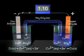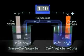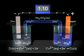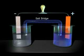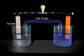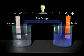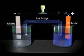Electrons flow from the anode to the cathode through the external circuit. To maintain electrical neutrality in the two cell compartments, ions must move through the salt bridge. In summary, remember that in a voltaic cell, the anode at which oxidation occurs is the negative electrode, the cathode at which reduction occurs is the positive electrode, and electrons flow through the external circuit from anode to cathode.